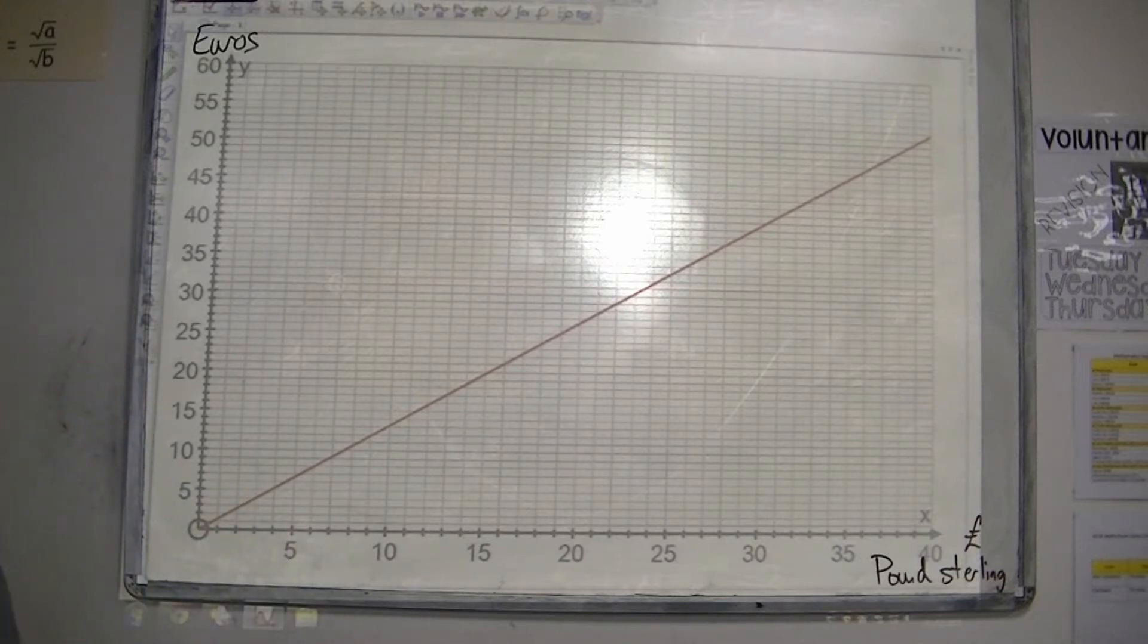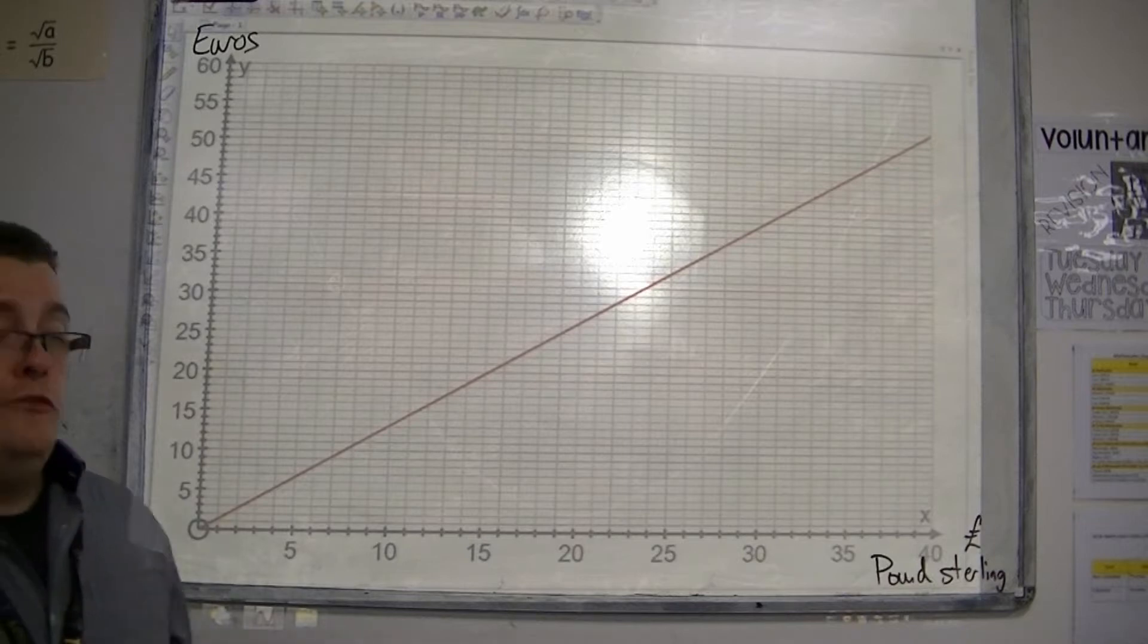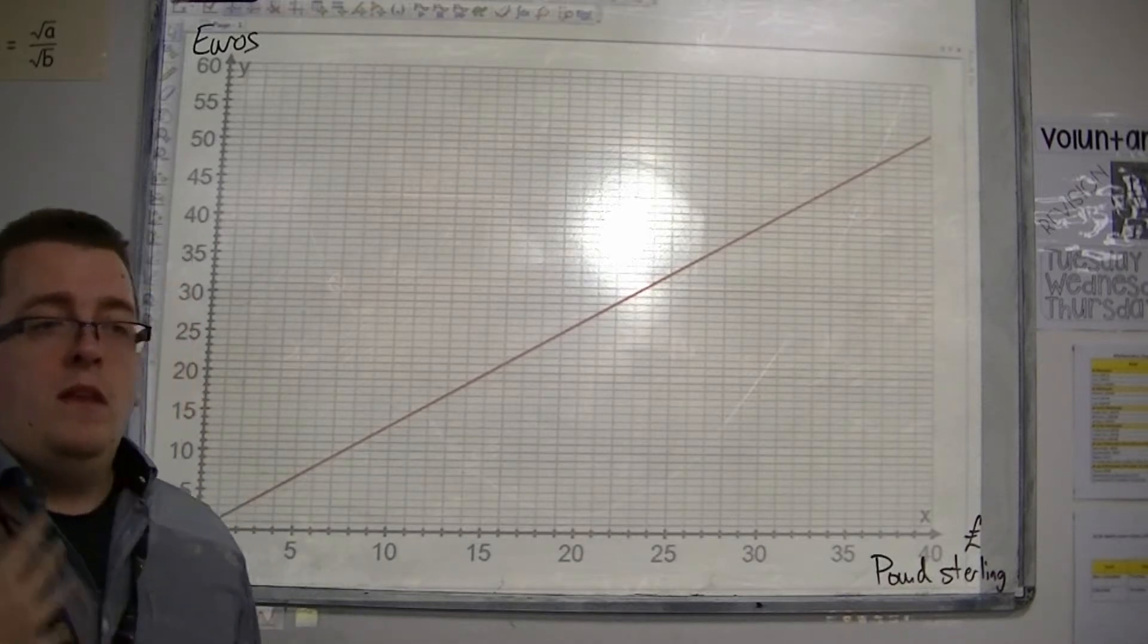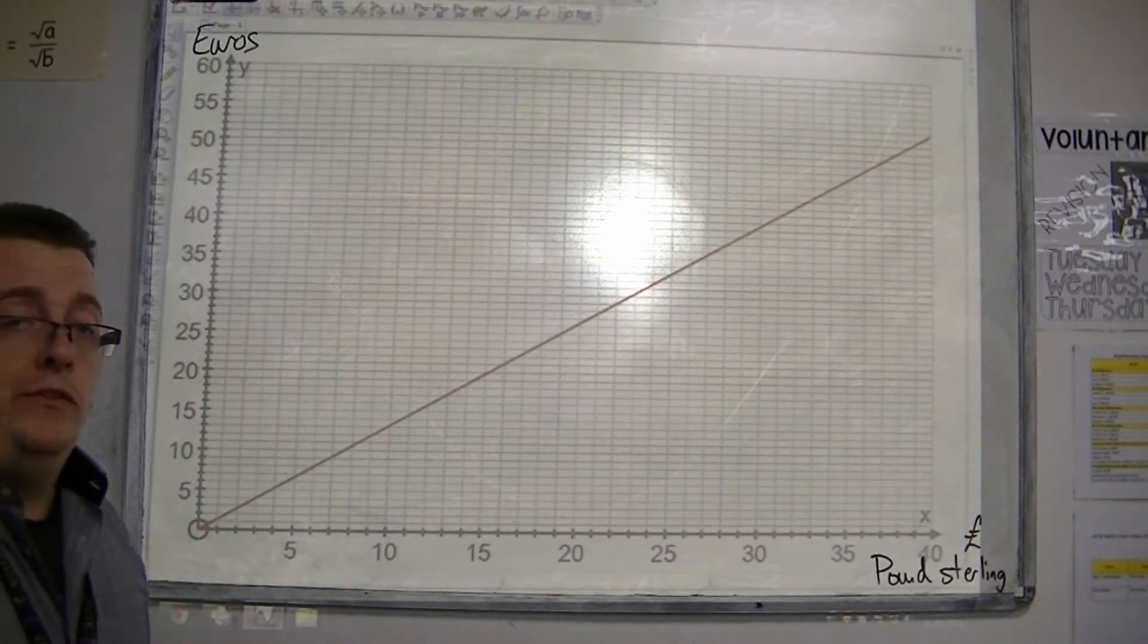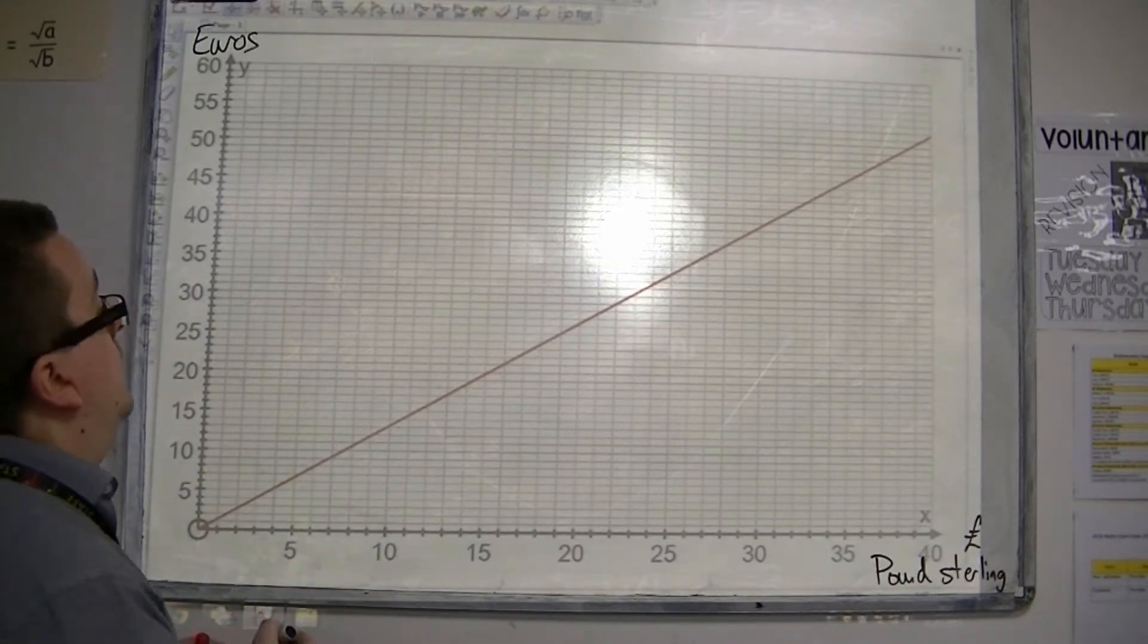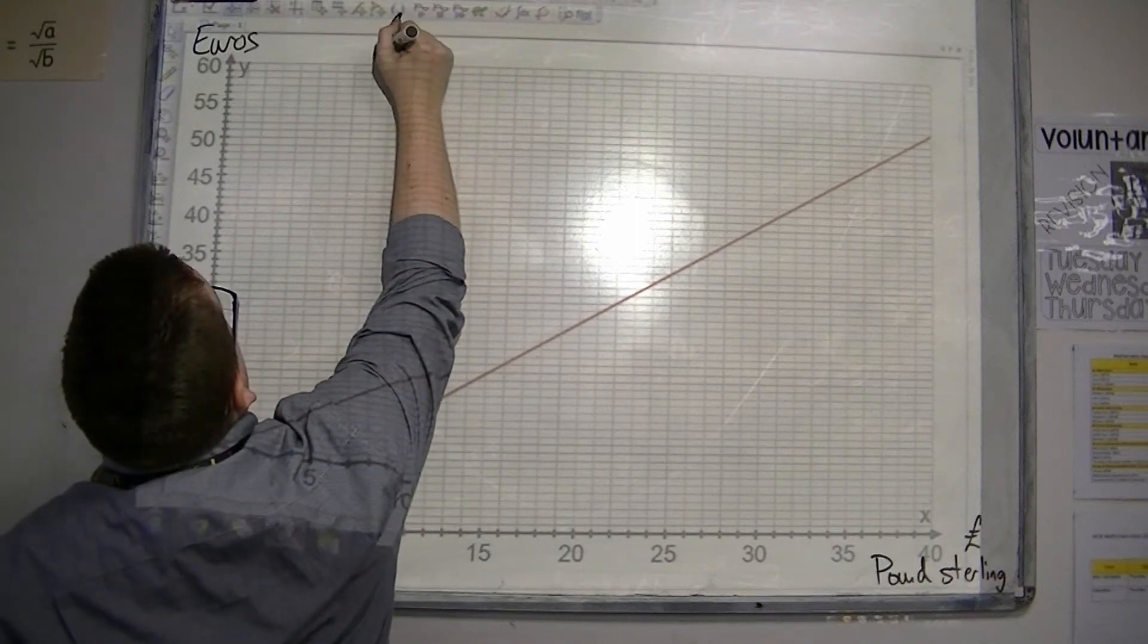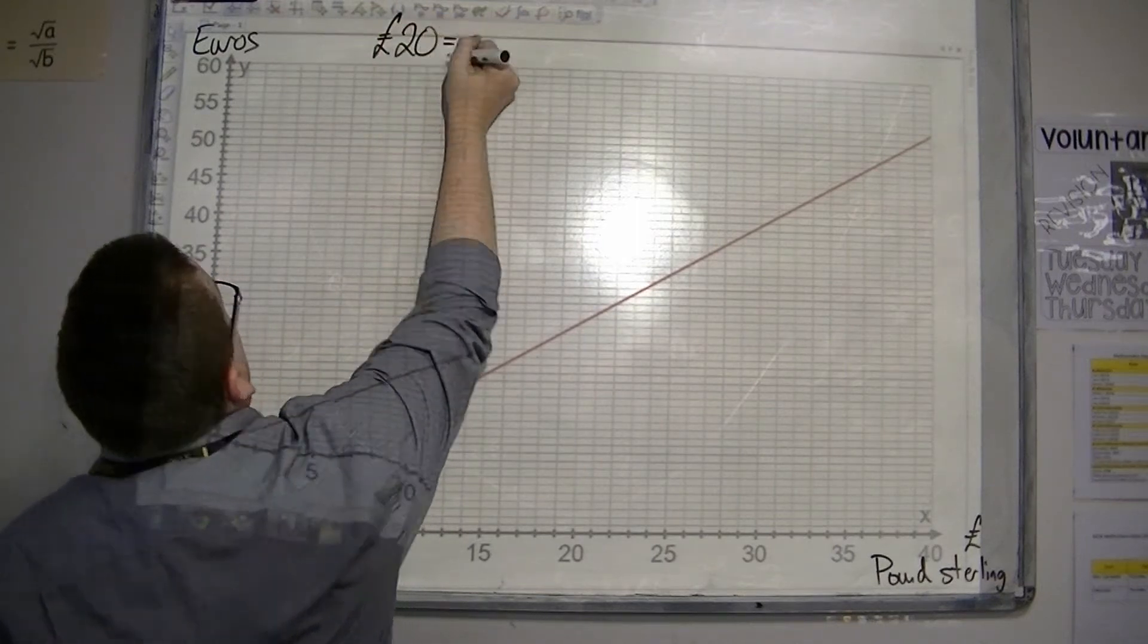And from that, you can be asked different types of questions. So, for example, let's say I wanted to know how much 20 pounds was in euros. So, first of all, I want to work out how much 20 pounds is in euros.